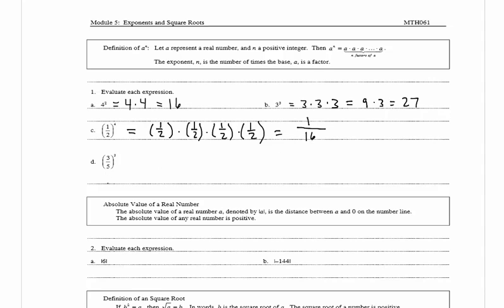In d we have 3 over 5 raised to the third power. Our base is 3 fifths and we have three factors of it. So we have 3 fifths times 3 fifths times 3 fifths. 3 times 3 times 3 is 27, and 5 times 5 is 25, times 5 is 125.